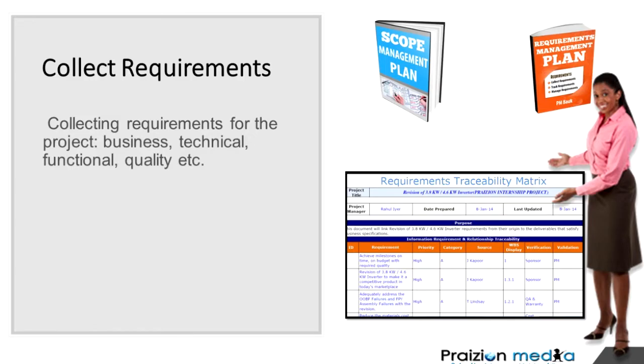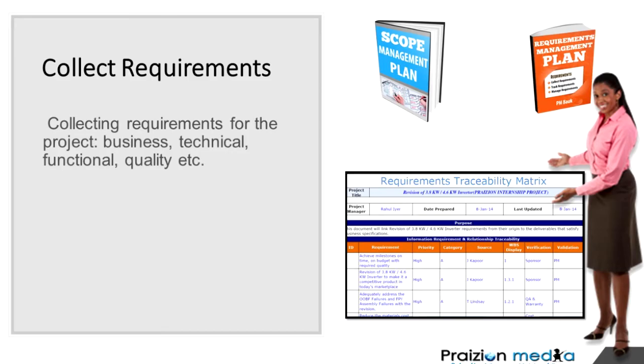Our next process is collect requirements. In collect requirements, we apply the scope management plan and the requirements management plan, which are encapsulated in a more overarching project management plan. We also need to think about our stakeholders — the stakeholder register and stakeholder engagement plans. Our major output from collecting requirements is the requirements documentation and requirements traceability matrix.